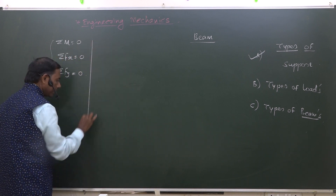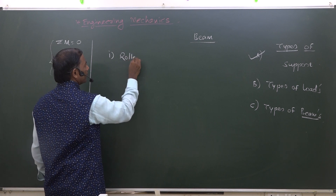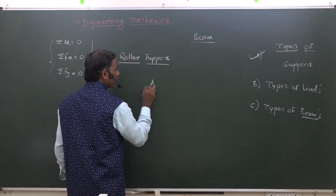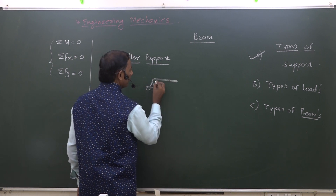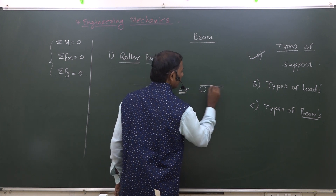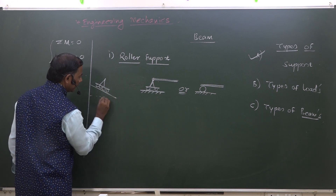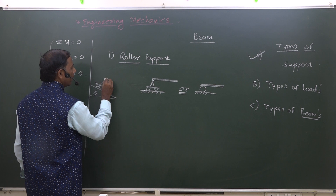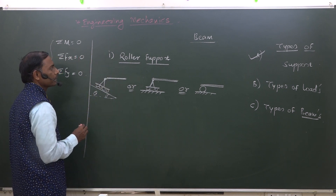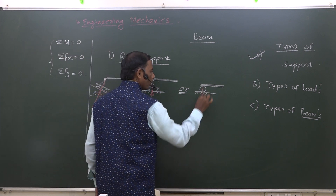The first type of support is called a roller support. Roller supports are symbolically represented as rollers resting on a horizontal floor. It can also be shown with rollers resting on an inclined plane, inclined at some angle theta with horizontal, supporting a beam. Roller support has only one reaction, which is always perpendicular — normal — to the surface on which the rollers are resting.